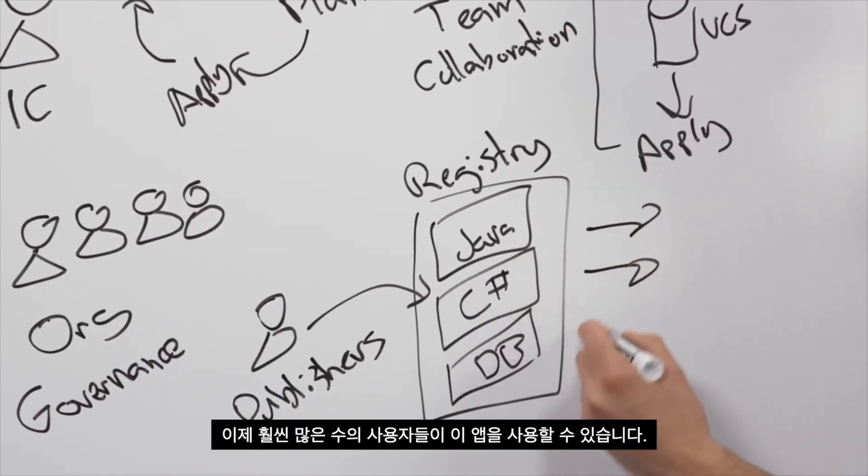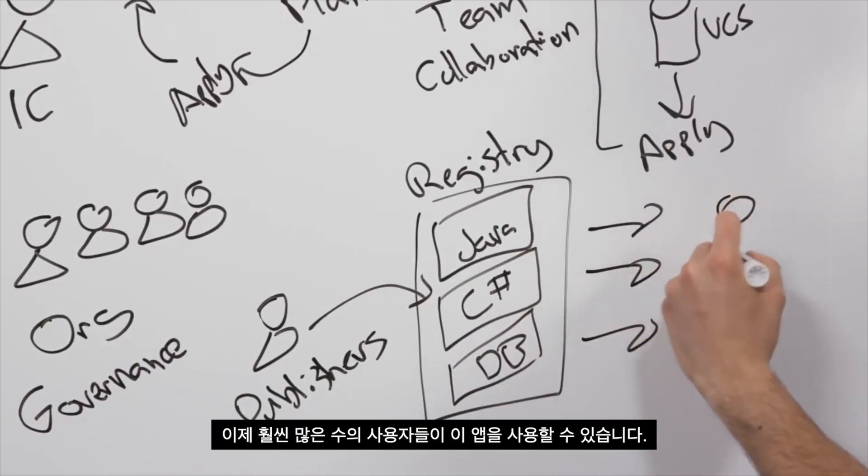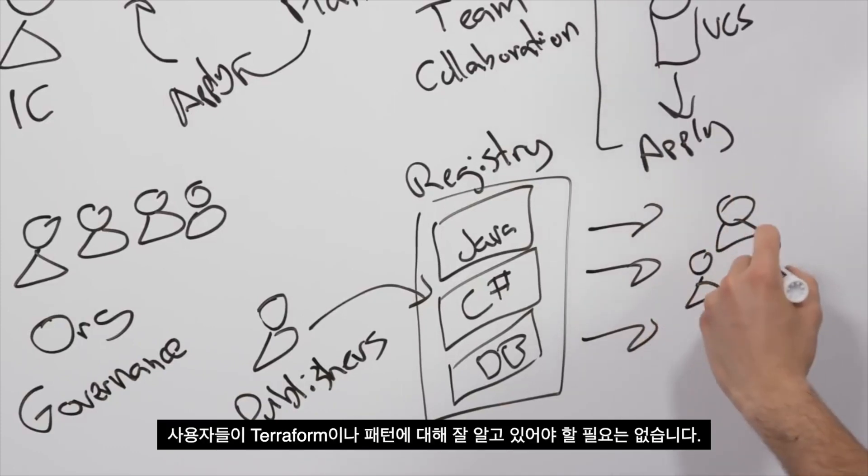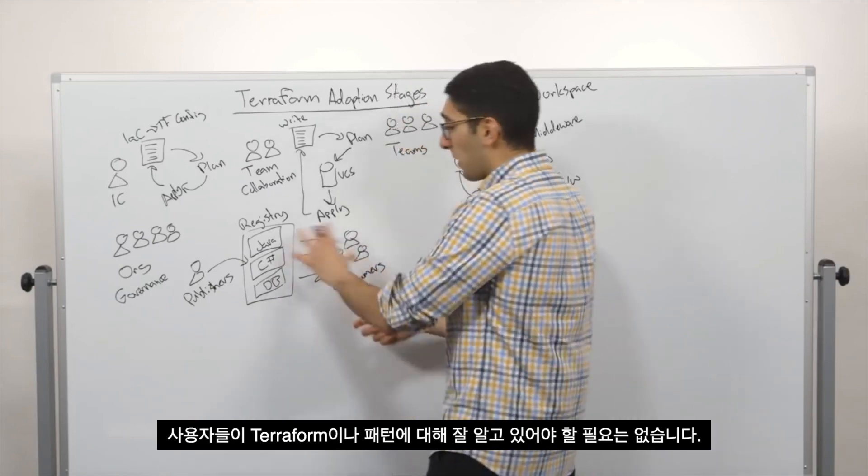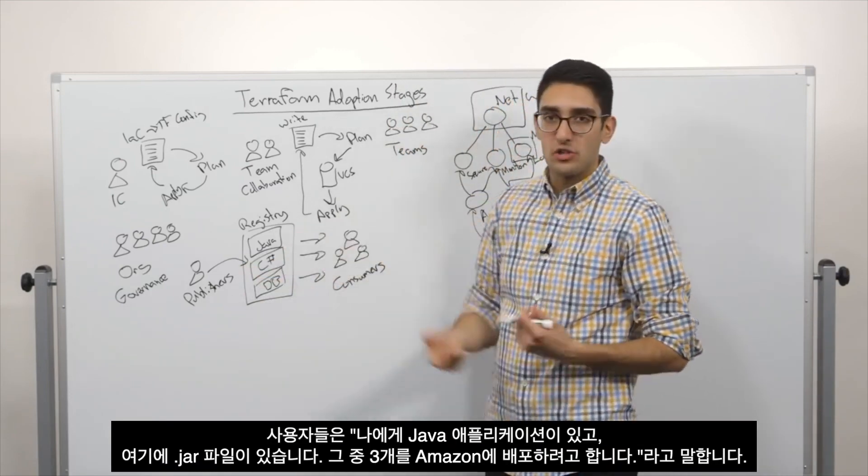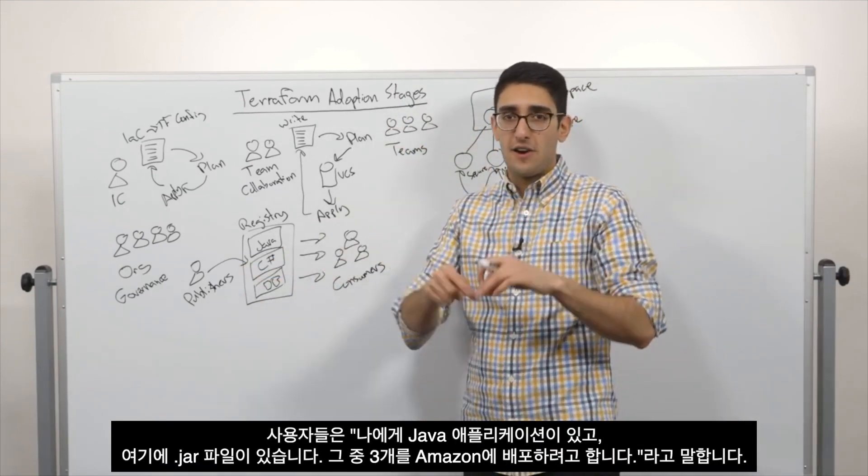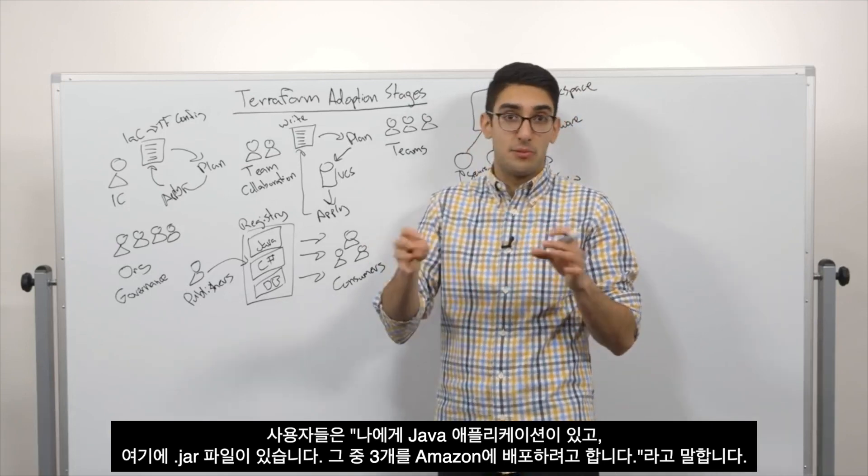And now, a much larger set of consumers can basically pull this out. And those consumers don't have to be intimately aware of Terraform or what our pattern is. They come in and say, I have a Java application, here's my JAR file, I want three of them, and deploy this to Amazon.